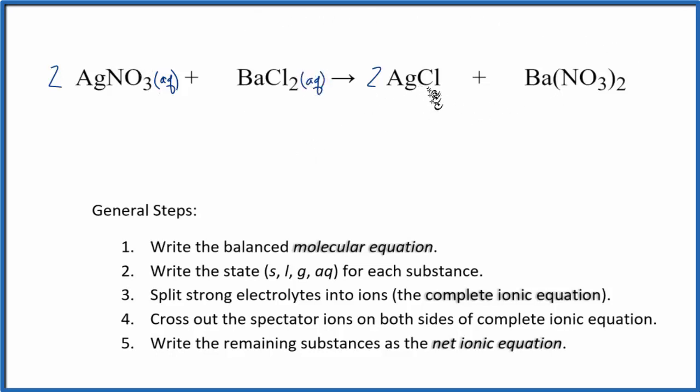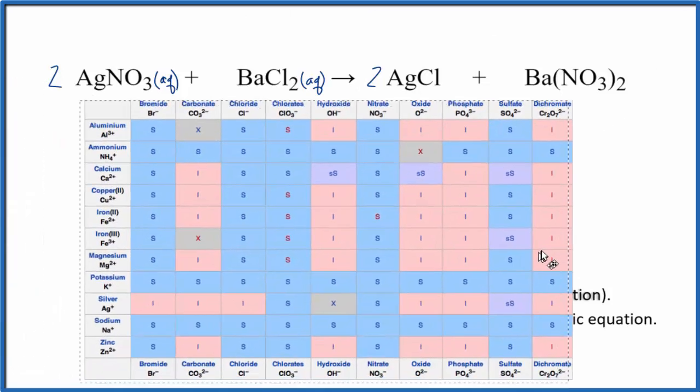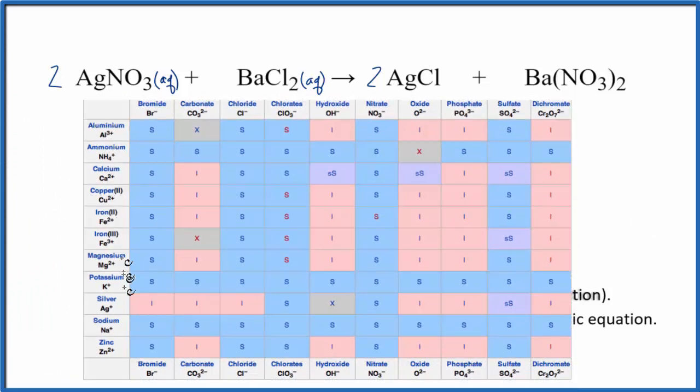On the product side, let's look at silver chloride. We said chlorides are normally soluble, but silver is one of the exceptions. You can see most chlorides are soluble, but silver chloride is insoluble and won't dissolve in water. So we're going to put an s for solid. It will sit at the bottom of the beaker as a precipitate. Then we have barium nitrate. Nitrates are very soluble, so put aqueous after that. Now we have all our states.